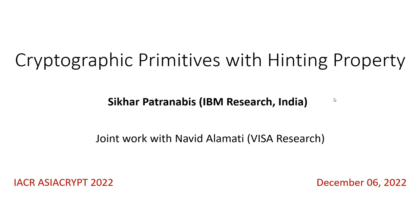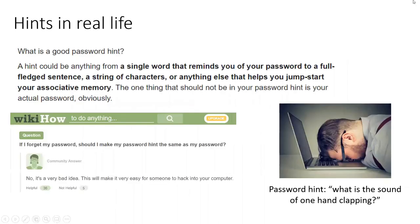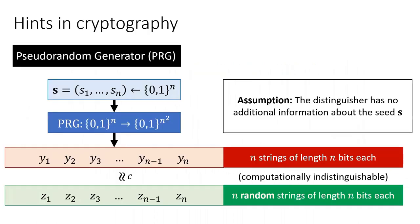In real life, a hint is typically something that reveals partial information about a secret, such as a password, without revealing the entire secret itself. Depending on their usage, hints may or may not be helpful. In this talk, we focus on the constructive usage of hinting properties in the context of a fundamental and widely used cryptographic primitive called a pseudorandom generator, or PRG in short.